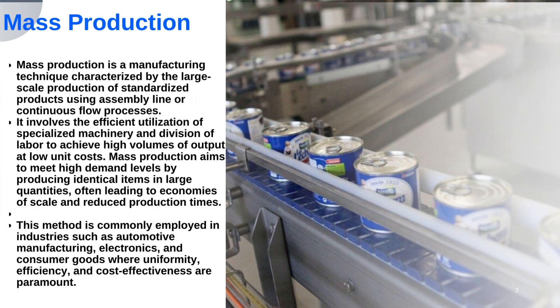Mass production is a cornerstone of industrial management, representing the streamlined and efficient production of large quantities of standardized goods. This method involves assembly line or continuous flow processes where products move through various stages of production with high levels of automation and division of labor. Mass production techniques allow for economies of scale, enabling manufacturers to produce goods at lower unit costs. Industries such as automotive, electronics, and consumer goods heavily rely on mass production to meet high demand levels. While mass production emphasizes efficiency, it may pose challenges in terms of flexibility and customization compared to methods like job production.